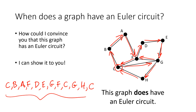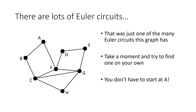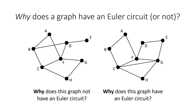When a graph does have an Euler circuit, it's pretty easy to demonstrate because all I have to do is show it to you. In fact, that's just one of many Euler circuits this graph has. As a practice problem, you can pause the video and try to come up with your own Euler circuit — you can start wherever you want. Now, why does a graph not have an Euler circuit? We've answered why the graph on the right has one, but why does the graph on the left not?